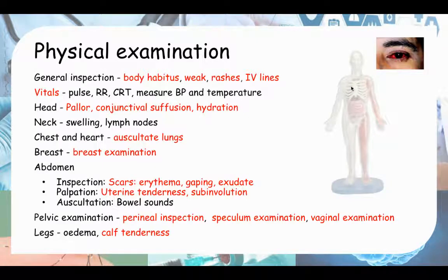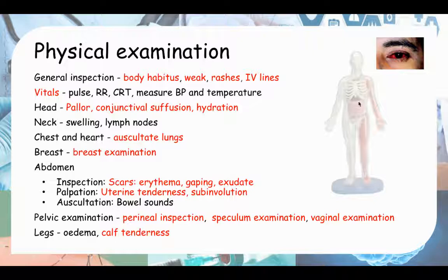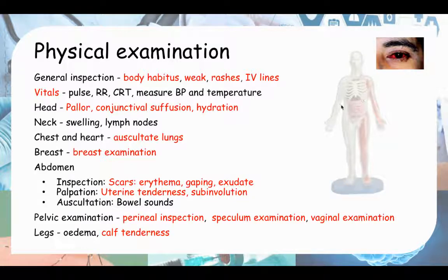After that, go to the neck. Ideally if there's infection, lymph nodes might be swollen. Also check for swelling of the thyroid gland — they might be having thyroid toxicosis causing their fever. For the chest and heart, auscultate the lungs — make sure you do this because pneumonia is a very important differential. You also want to examine the breast if there's any indication of mastitis.